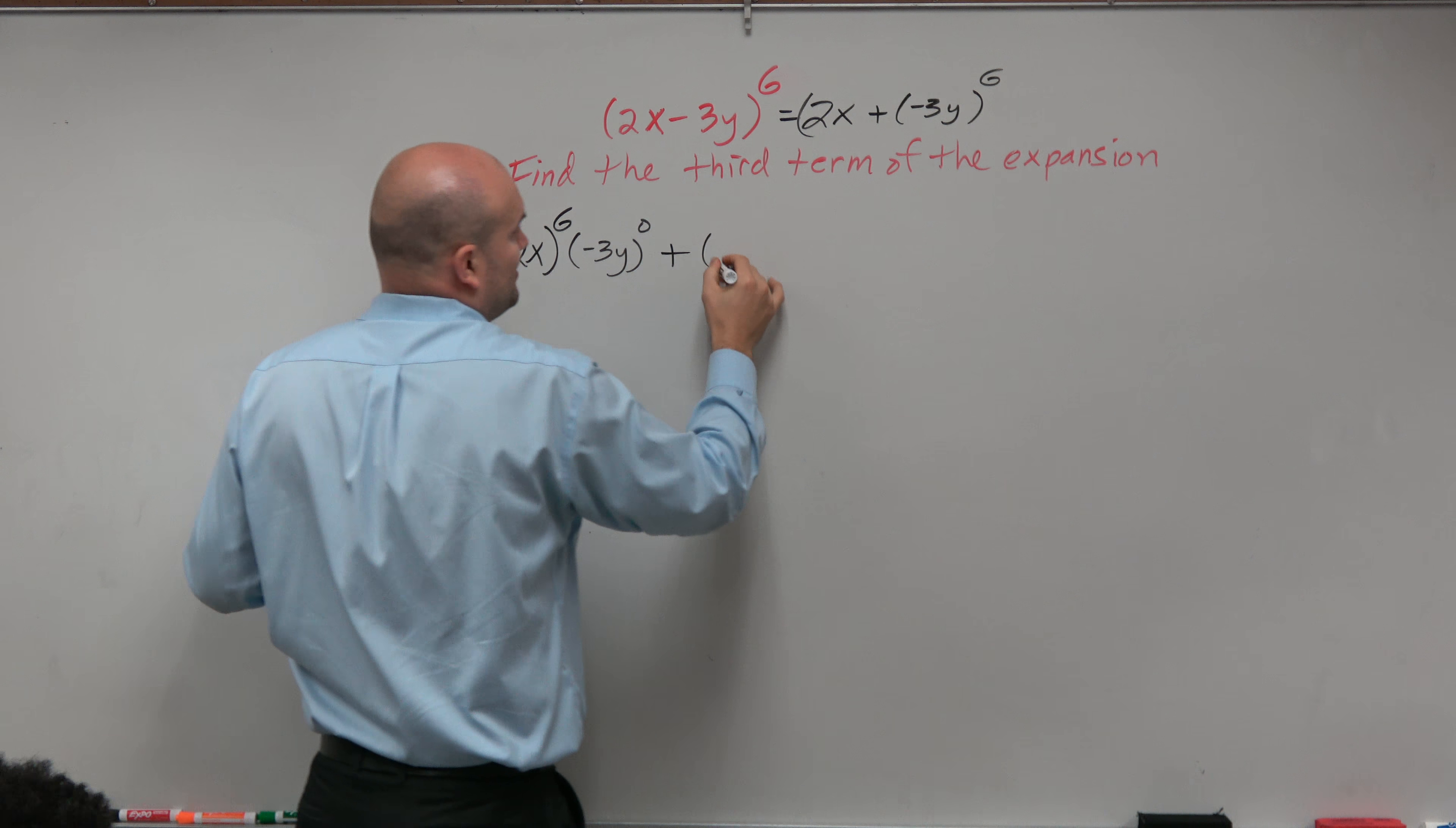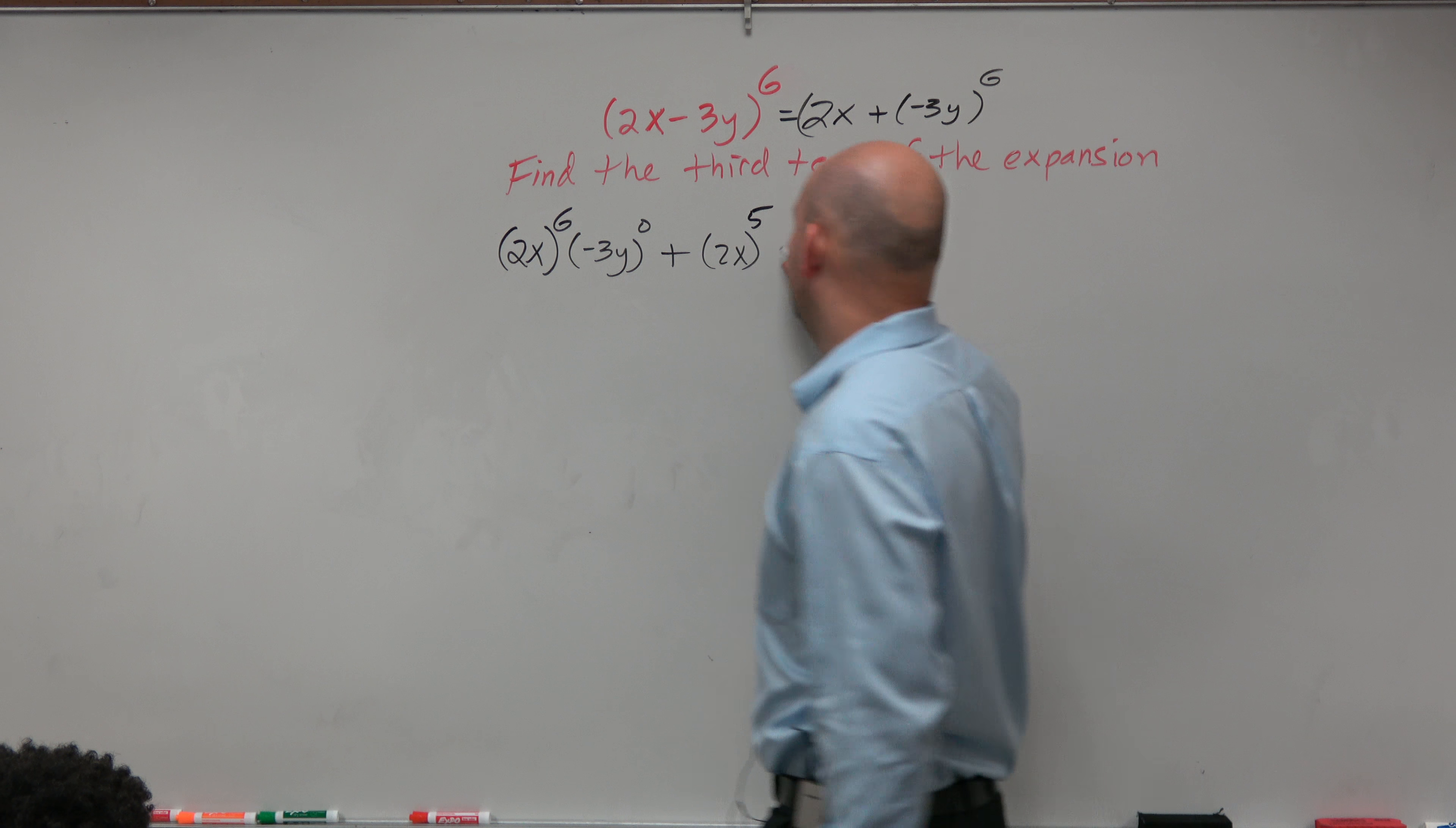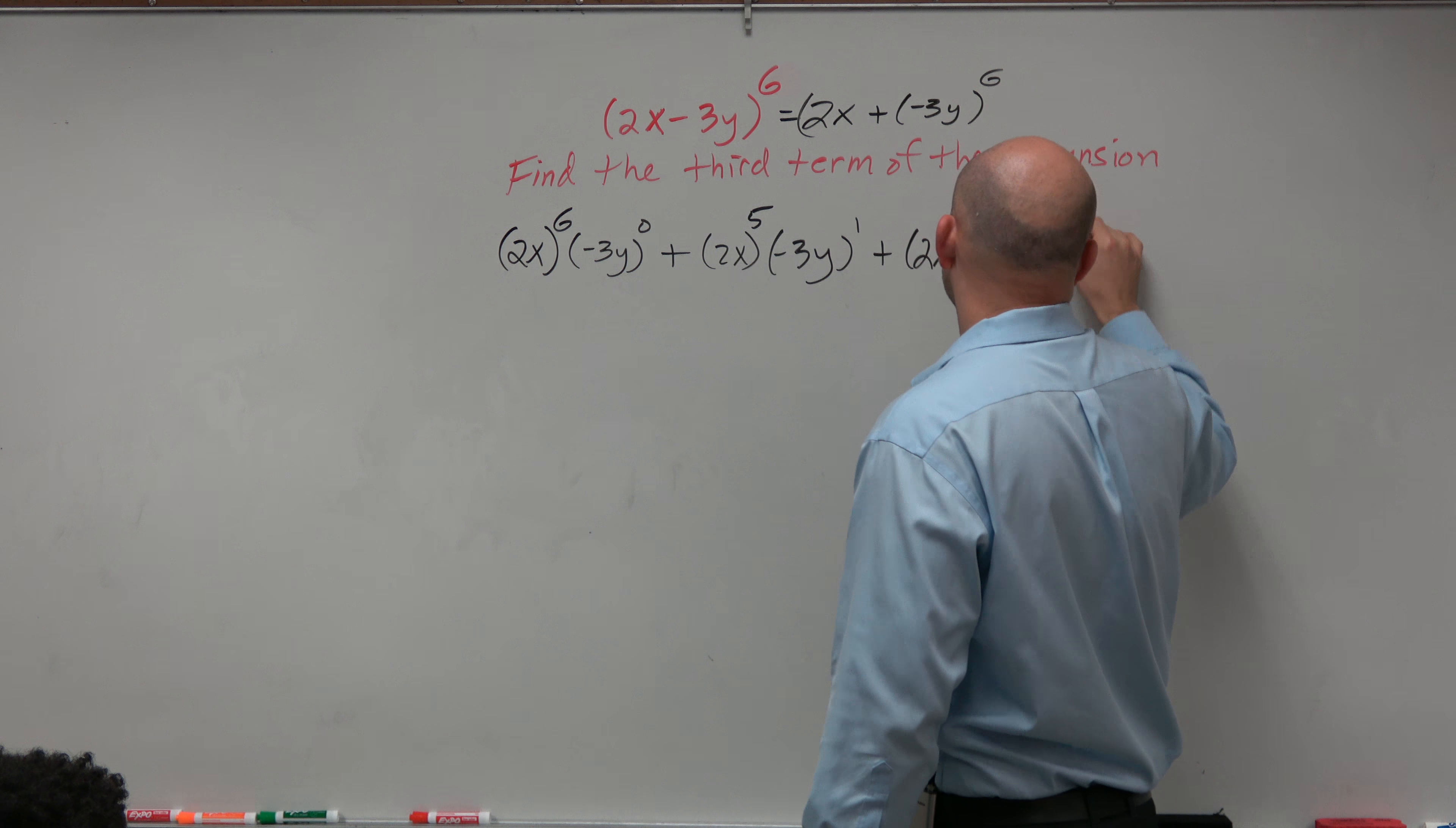Second term would be 2x to the fifth. The next one for this one is now going to be ascending. Plus the next one is going to be 2x to the fourth minus 3y to the second.